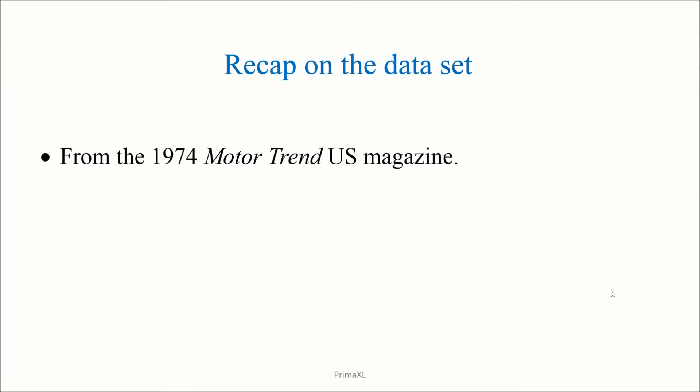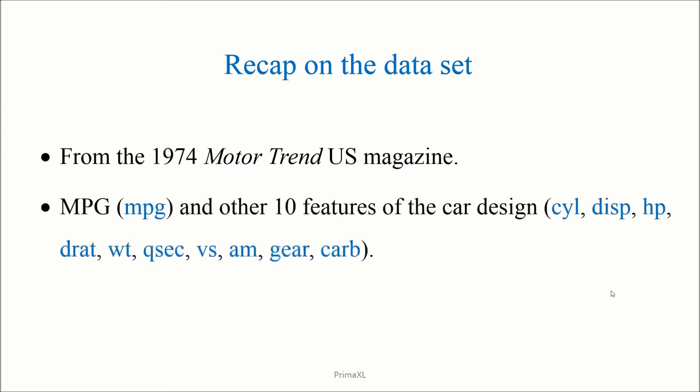Examples. A quick recap about the dataset. The dataset comes from the 1974 Motor Trend US Magazine. This dataset shows the MPG or miles per gallon and 10 other features of the car design.